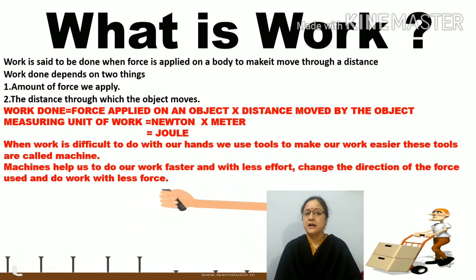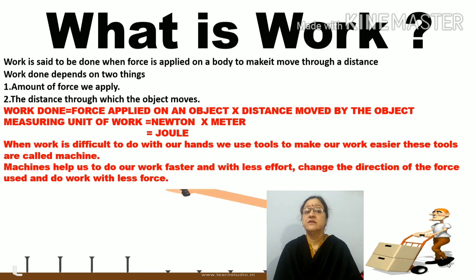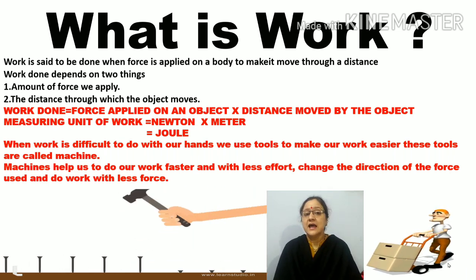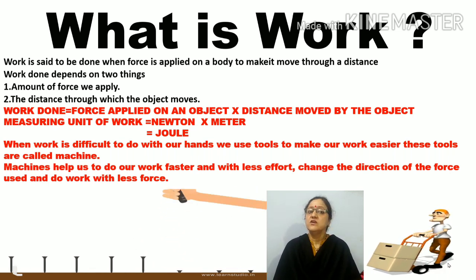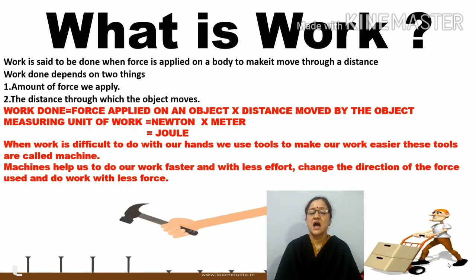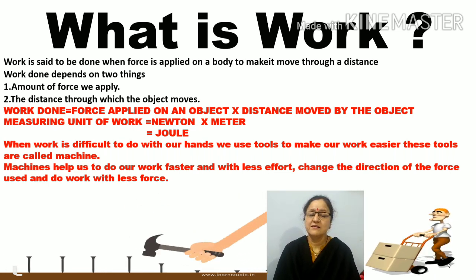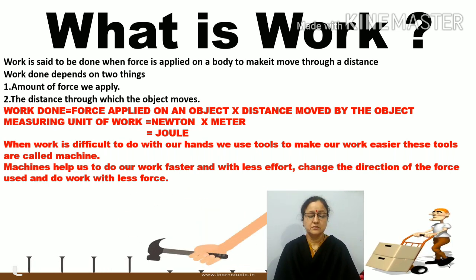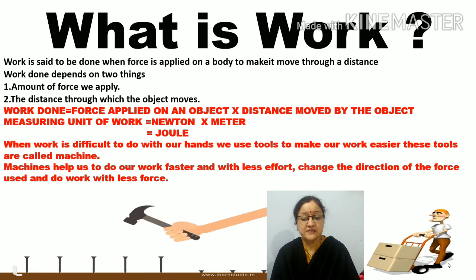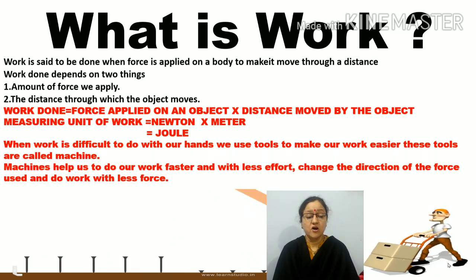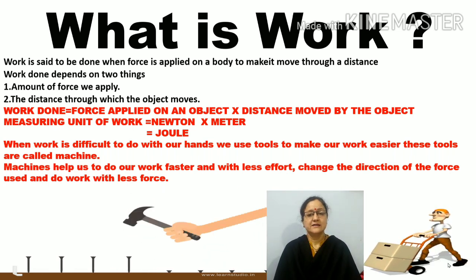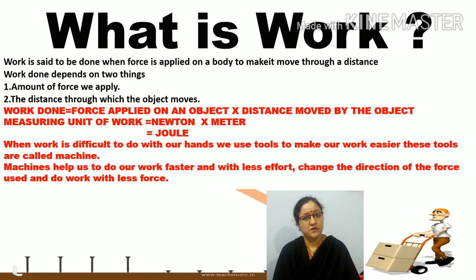When work is difficult to do with our hands, we use some tools to make our work easier and in lesser time — we use some kinds of machines. Machines are the devices that make our work easier. Machine helps us do our work faster and with lesser effort, and they change the direction of the force used to do work with less force. Let us understand about different types of machines.